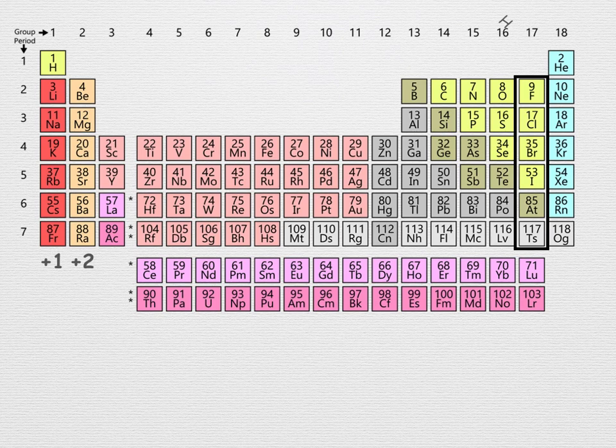In compounds, group 17 elements, the halogens, have an oxidation state of minus one. Picking up another electron completes their octet and makes them very stable.